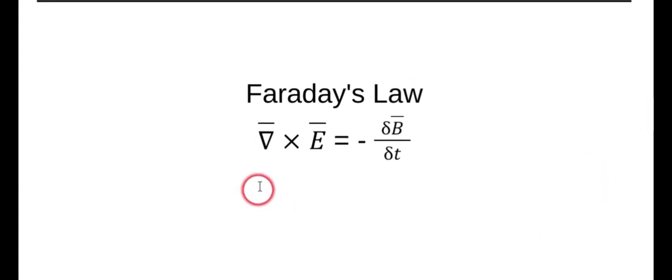So this is the del operator cross product with the electric field, this is called the curl, that's the common name for it. It's a cross product, equal to the negative of the differential of the magnetic field with respect to time. In the last video I left off by saying I don't fully understand this negative.